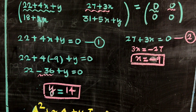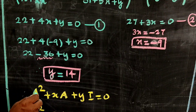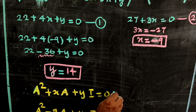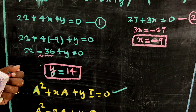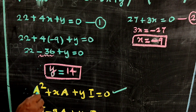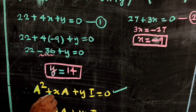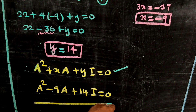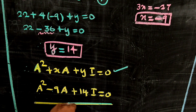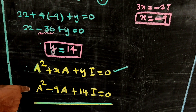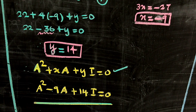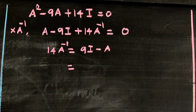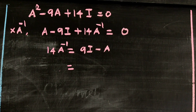So A squared plus xA plus yI equals zero, the zero matrix. Therefore A squared minus 9A plus 14I equals zero. This is the condition. So A inverse can be derived from this. A squared minus 9A plus 14I equals zero, so A inverse equals zero.